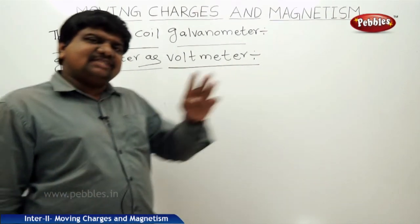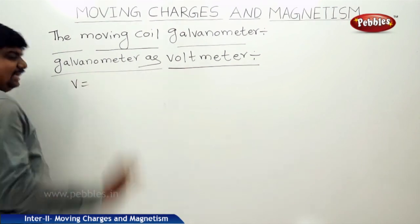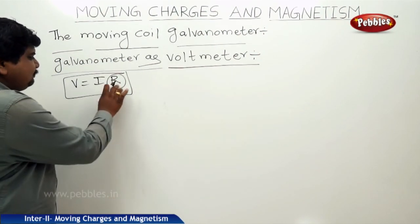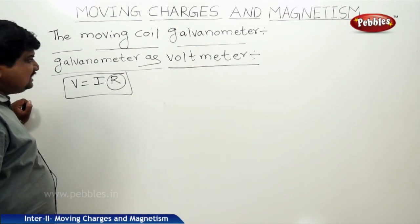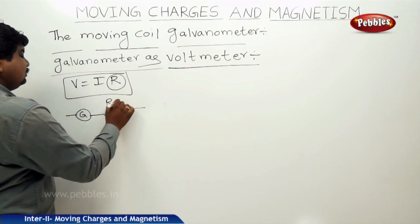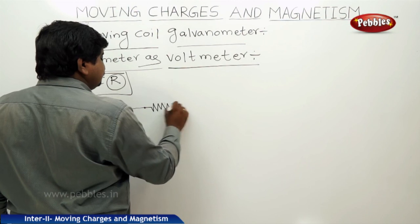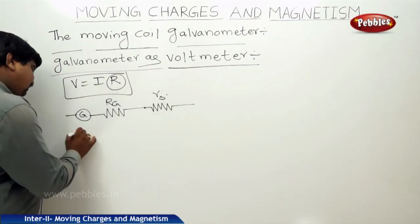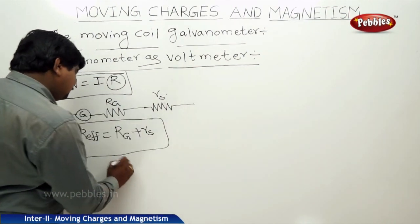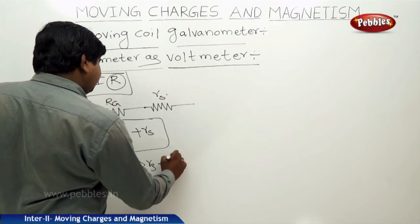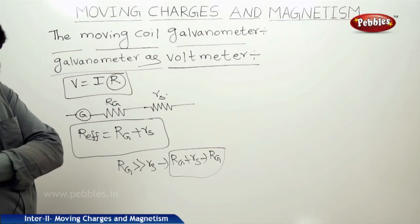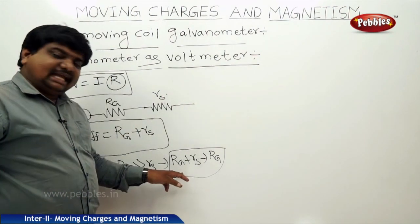To make a galvanometer act as a voltmeter — a device to measure voltage — we use V equals I·R, meaning resistance is multiplied with current. This is achieved when a resistor is connected in series with the galvanometer resistance. The series resistor is R_s, making the effective resistance R_effective equal to R_g plus R_s. If R_s is much greater than R_g, then R_effective approximately equals R_s. When shunt resistance is connected in series, the galvanometer acts as a voltmeter.